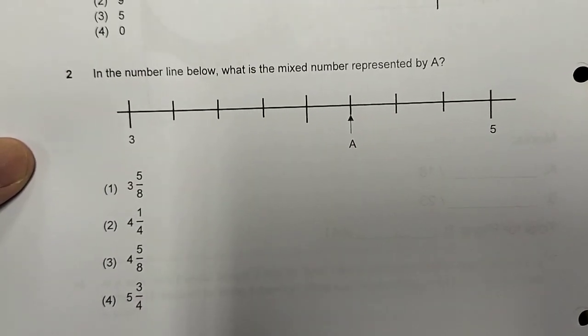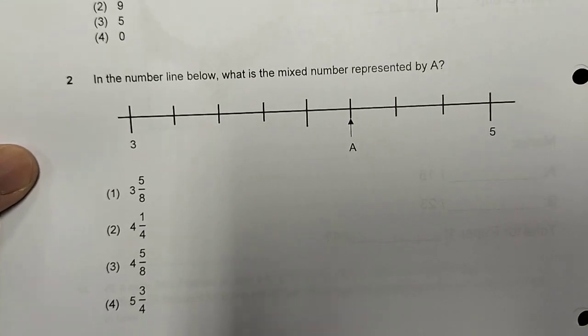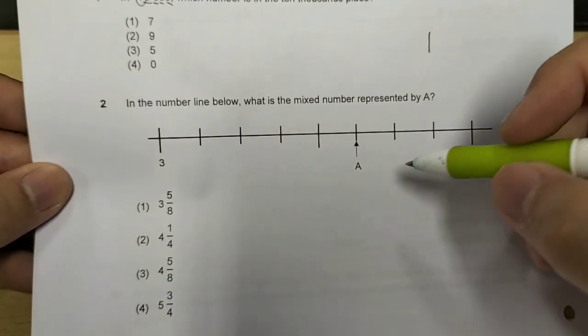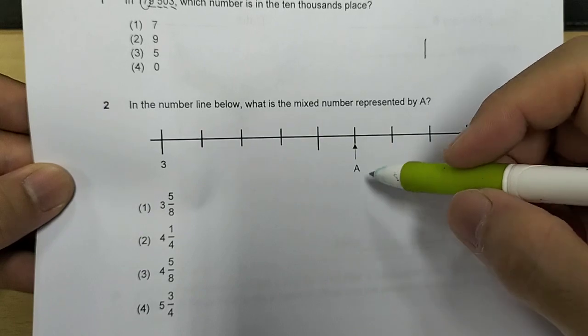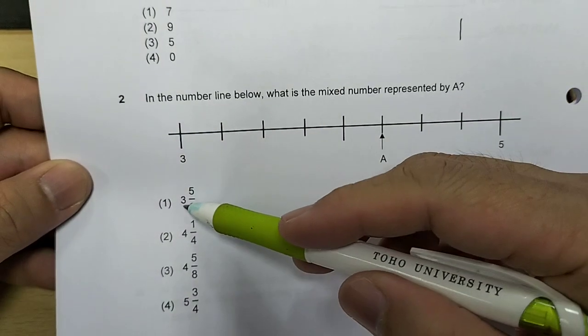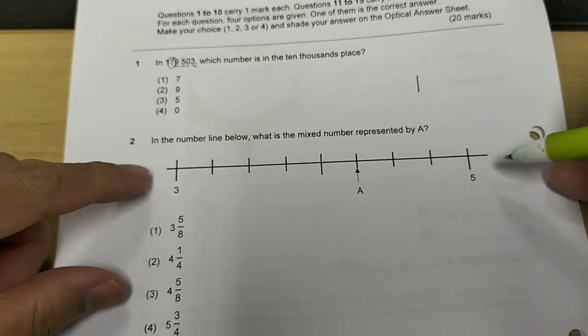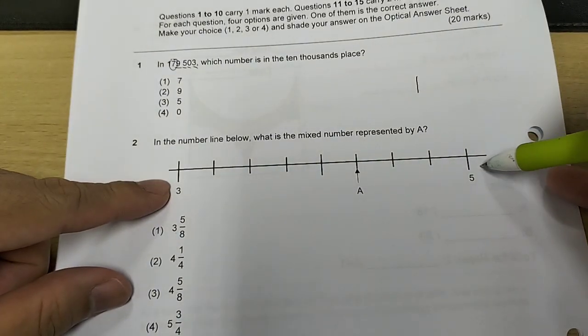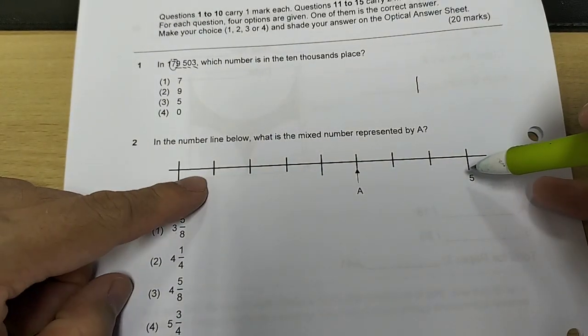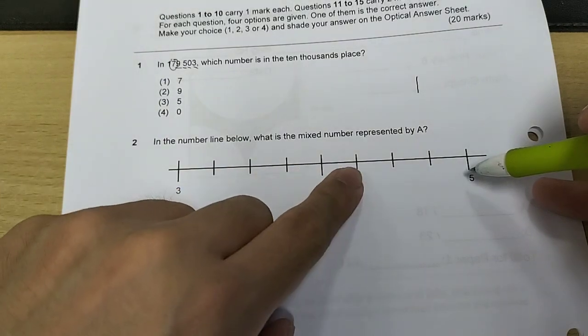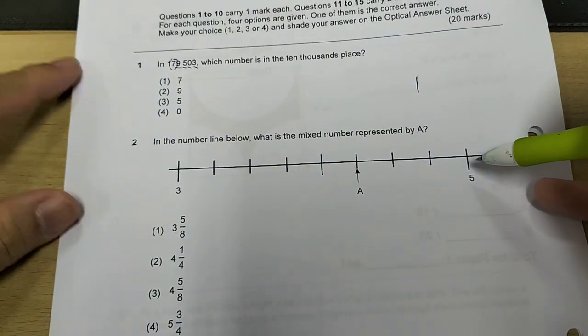What is a mixed number represented by A? Now mixed number is what you will describe something with a whole number and a fraction beside it. Now you notice here there's a whole number 3, whole number 5, in between here 1, 2, 3, 4, 5, 6, 7, 8. There are 8 gaps.